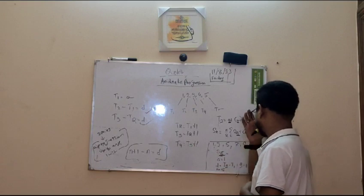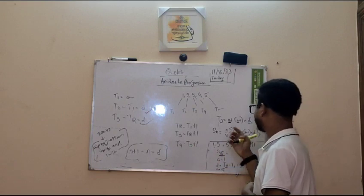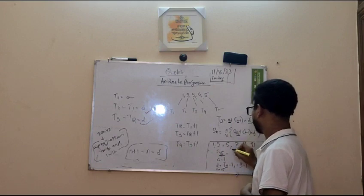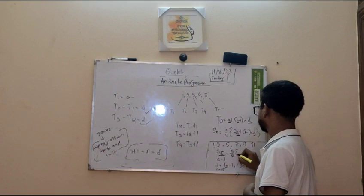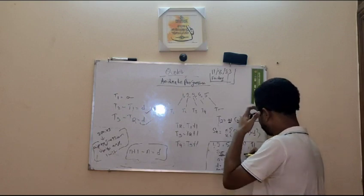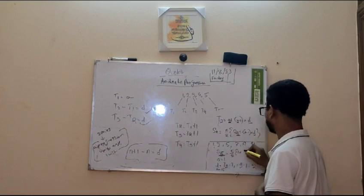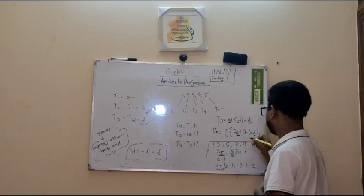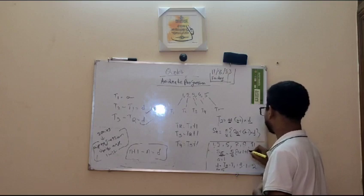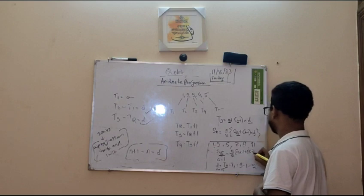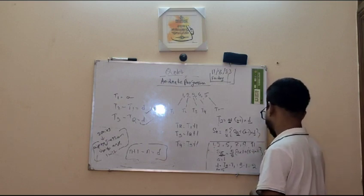So let's input all these values within the formula. The formula is given 15 by 2, 2 into A. A is 1, plus what is N? N is 15, so 15 minus 1 into D, D is 2.